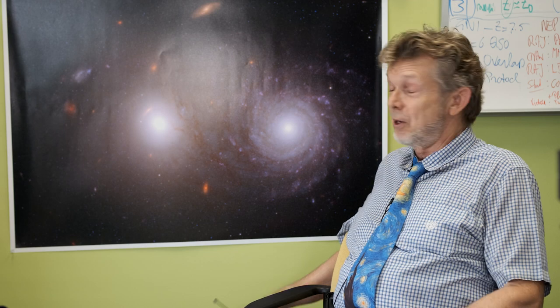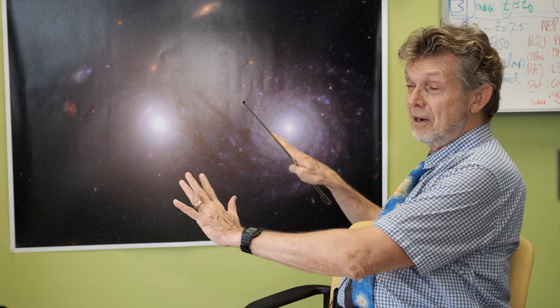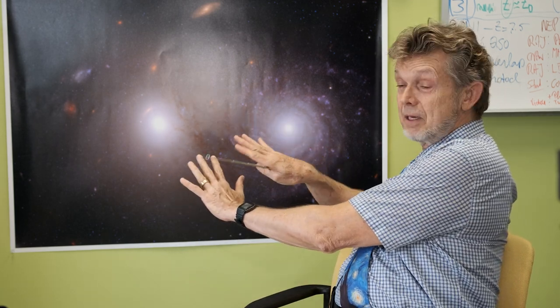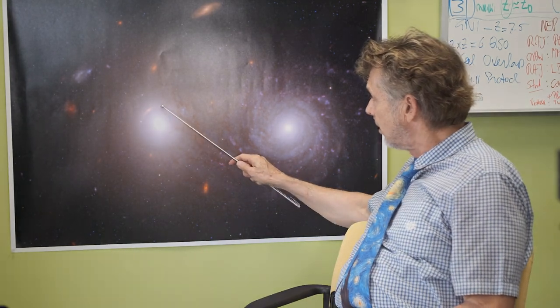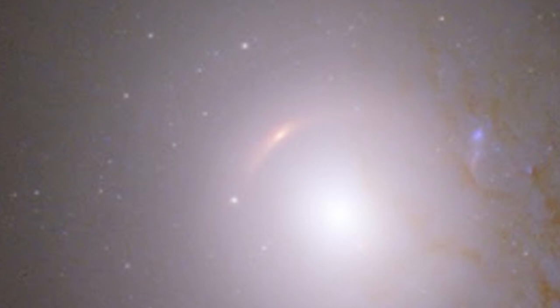We got more than we bargained for. Not only is this a rather unique alignment of an elliptical in the background and a spiral we're trying to measure in the foreground. But you see this funny arc looking object, that's a galaxy.